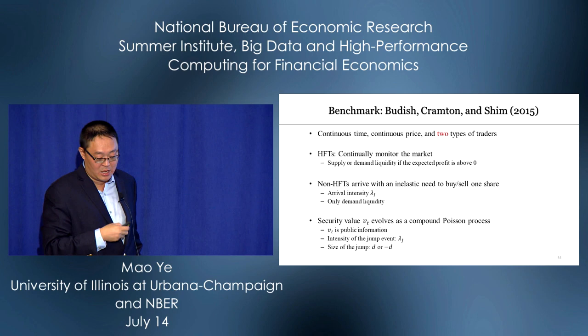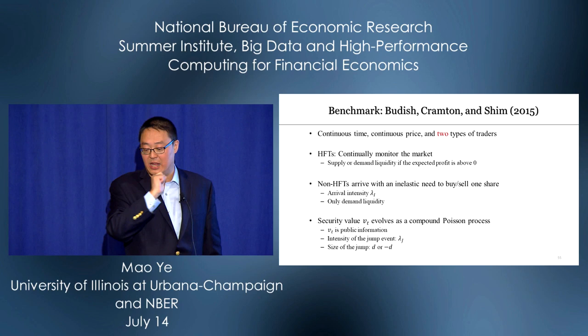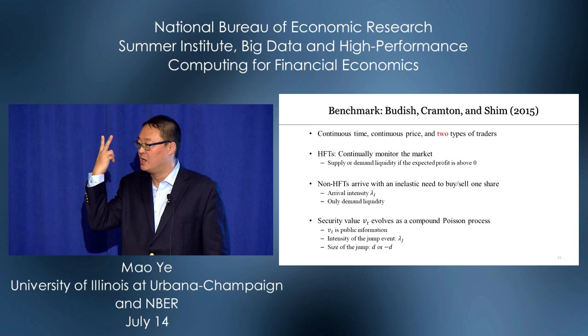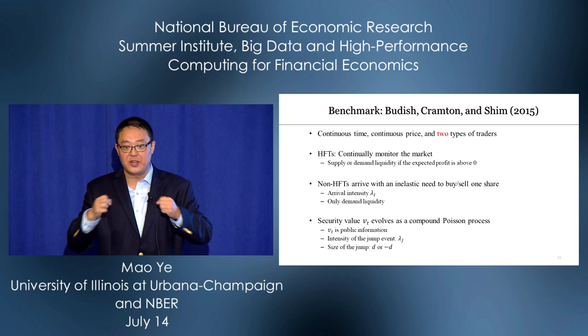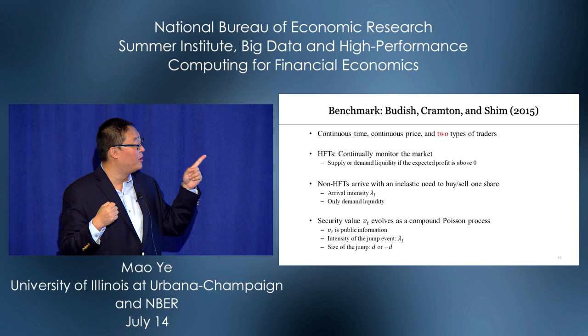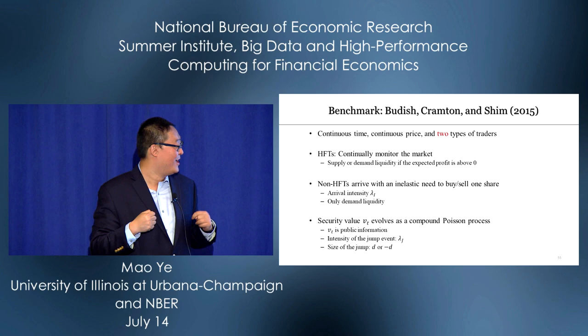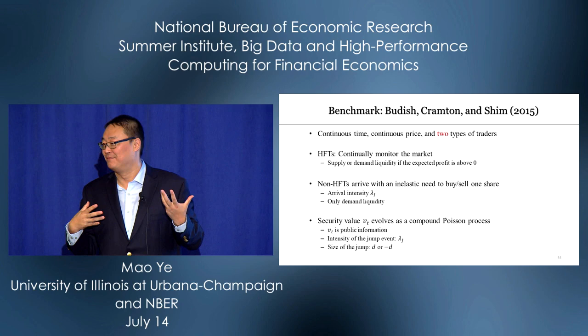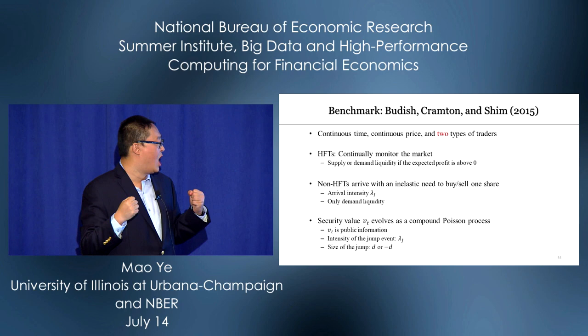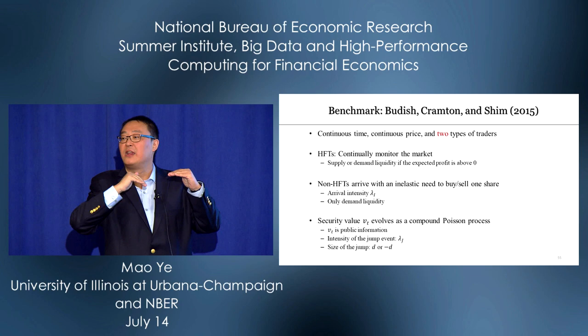Let me start with a benchmark: a nice paper by Budish, Cramton, and Shin, presented as the AFA/AEA joint keynote. It's a continuous-time, continuous-price model with two types of traders: HFTs and non-HFTs. HFTs consistently monitor the market for any pricing or profit opportunity and demand or supply liquidity whenever profitable. Non-HFTs have an elastic demand to buy or sell one unit, with arrival intensity lambda_i, and only demand liquidity. The security value V_t evolves as a compound Poisson process — public information, observable to everyone — and can jump with intensity lambda_j, going up or down with equal probability, with jump size d.